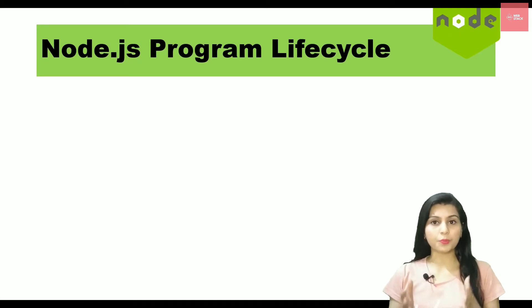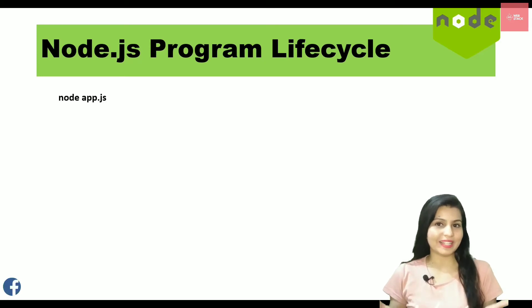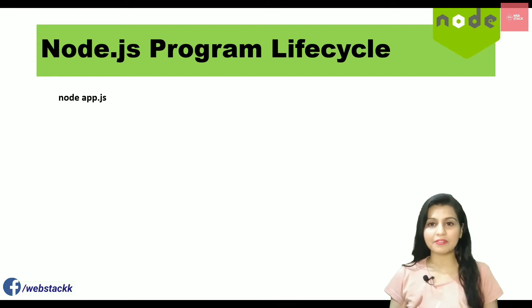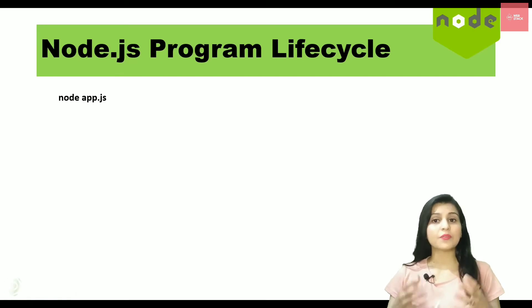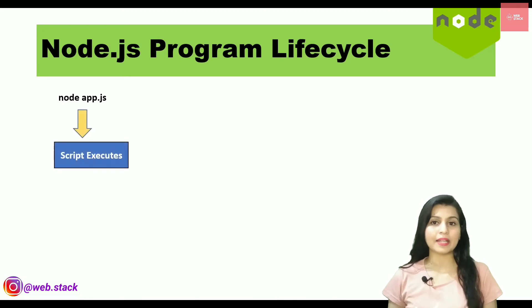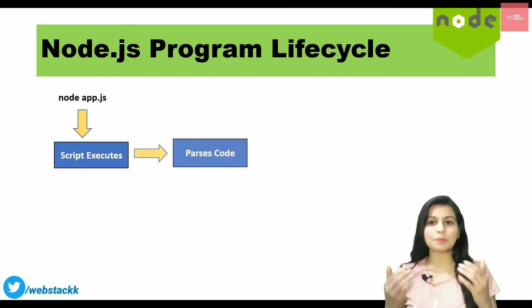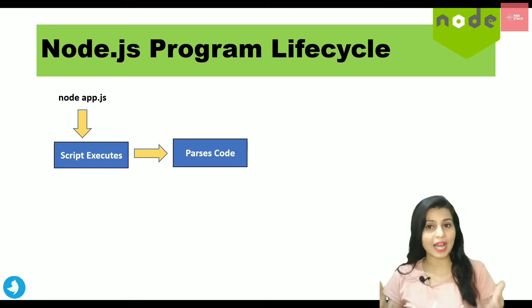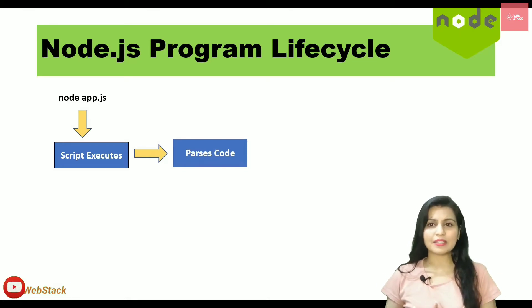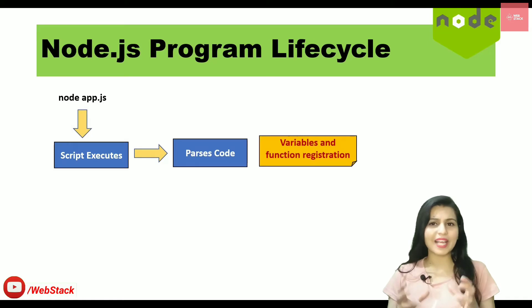To execute the node program, we simply write the command 'node' followed by the file name — in our case it's app.js, so we write 'node app.js'. That will start executing my JavaScript code, and after that it gets parsed by the parser and compiled to machine language, meaning all the functions and variables get registered in memory locations.